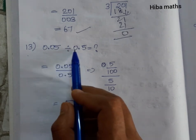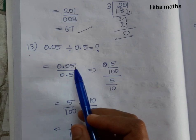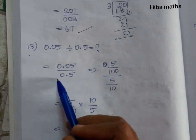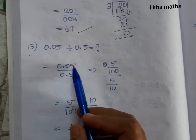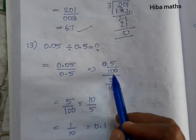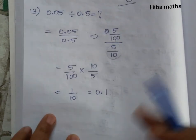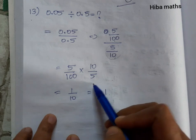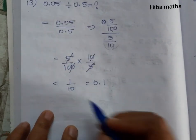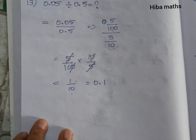Thirteenth question: 0.05 divided by 0.5. Using the same method: 0.05 into 100 gives 5; 0.5 into 10 gives 5. So we have 5 by 10, which equals 1 by 10. The 5s cancel. Answer is 1 by 10, that is equal to 0.1. This completes Exercise 1.4. Next video will cover Exercise 1.5. Thank you so much for watching. Bye-bye.